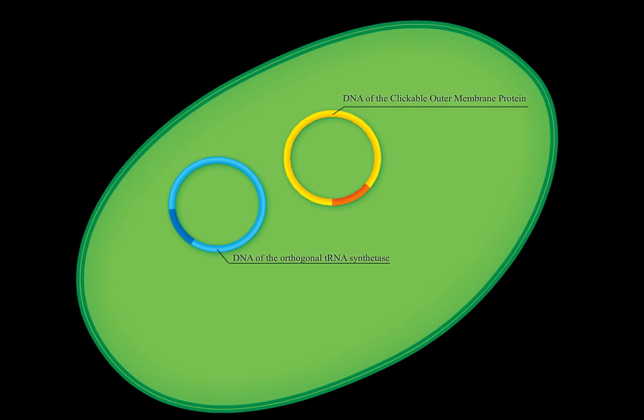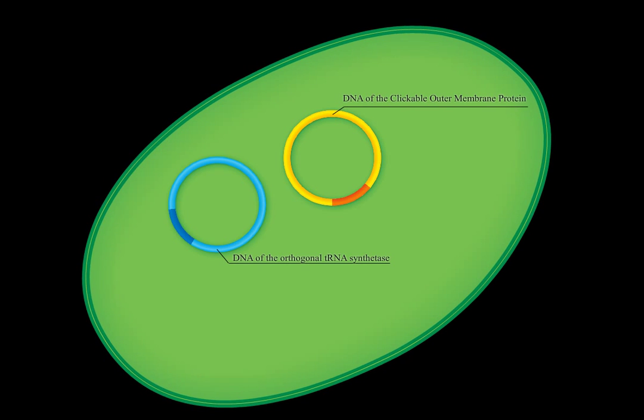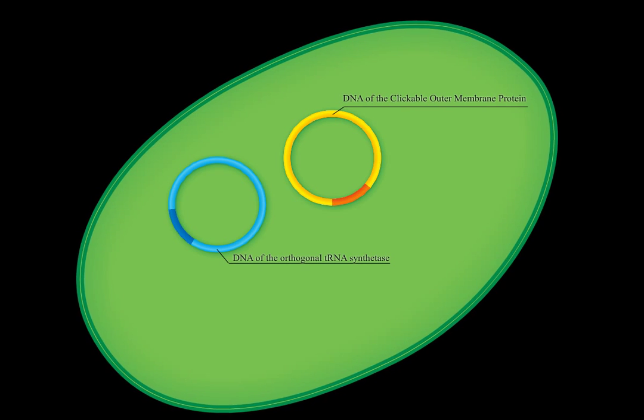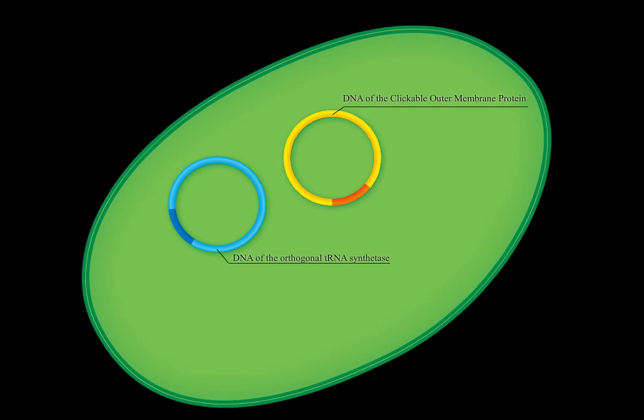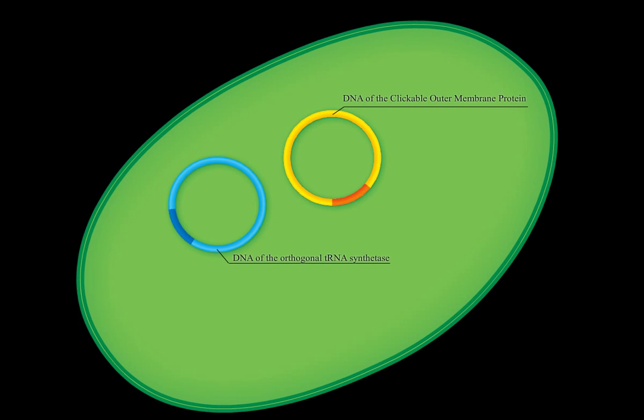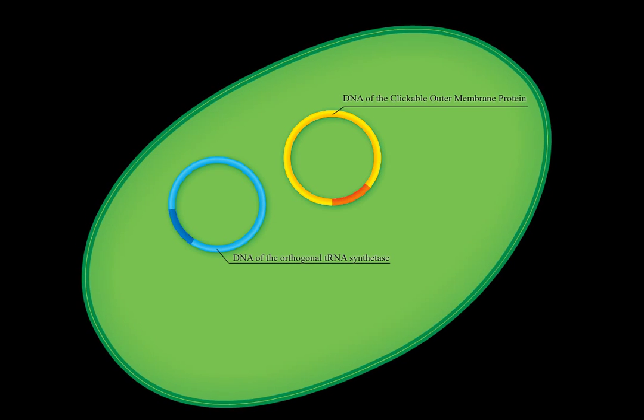Two plasmids are transformed into E. coli. One, here shown in yellow, encodes for a modified outer membrane protein. This protein is called the clickable outer membrane protein, or COMP in short.